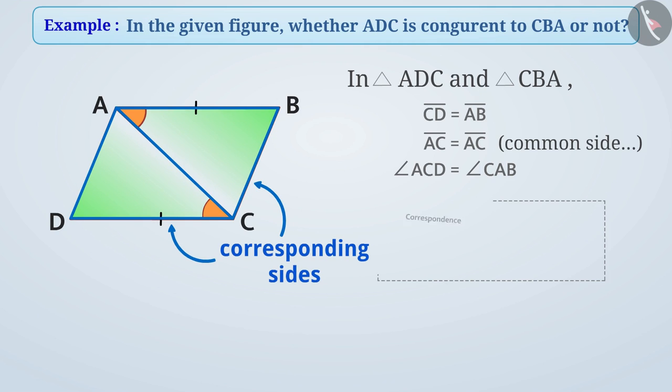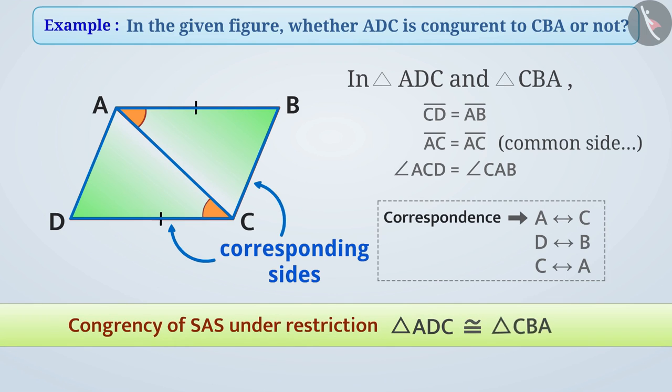Here, correspondence are. So here, triangle ADC is congruent to triangle CBA.